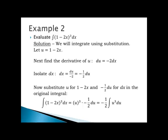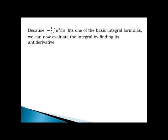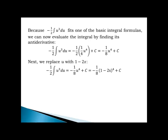The integral changes from the quantity 1 minus 2x to the third power with respect to x, to u to the third power times negative one-half du, or negative one-half times the integral of u to the third power with respect to u. This fits a basic integral formula, so the antiderivative of u to the third power is one-fourth times u to the fourth power. Multiplying by negative one-half gives negative one-eighth u to the fourth plus c. Replacing u with 1 minus 2x, the final answer is negative one-eighth times the quantity 1 minus 2x to the fourth power plus c.